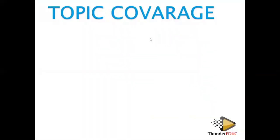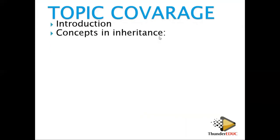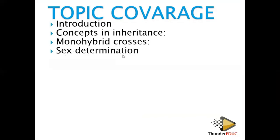In this topic, these are the subtopics you need to cover: first, concepts of inheritance and the terminologies you need to know; monohybrid crosses, which involve one character; sex determination — the percentage chance of producing a girl or a boy; and sex-linked inheritance, the characters which are linked to the sex.